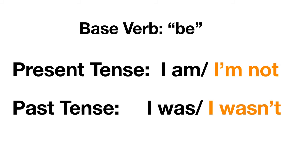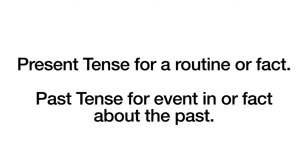Now for the base verb 'be,' the present tense is 'I am' and the past tense is 'I was.' Remember, it's an irregular verb, so the present and past tenses look very different from each other. Present tense: 'I am,' 'I am not.' Past tense: 'I was' or 'I was not.' Present tense is for a routine or fact; past tense is for an event in or fact about the past.